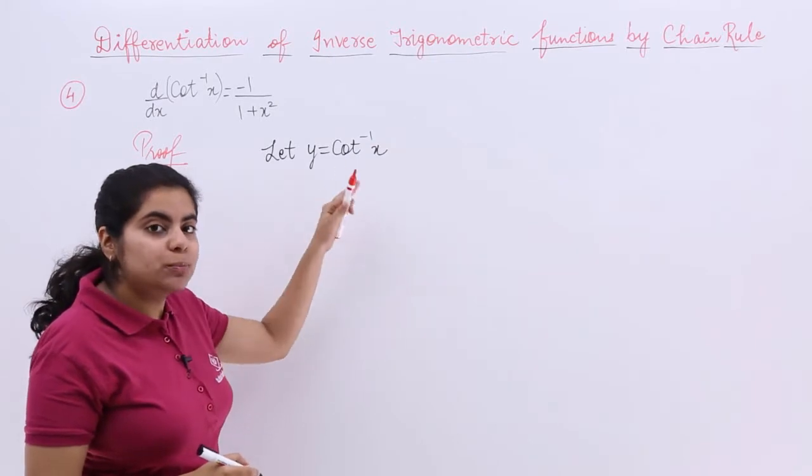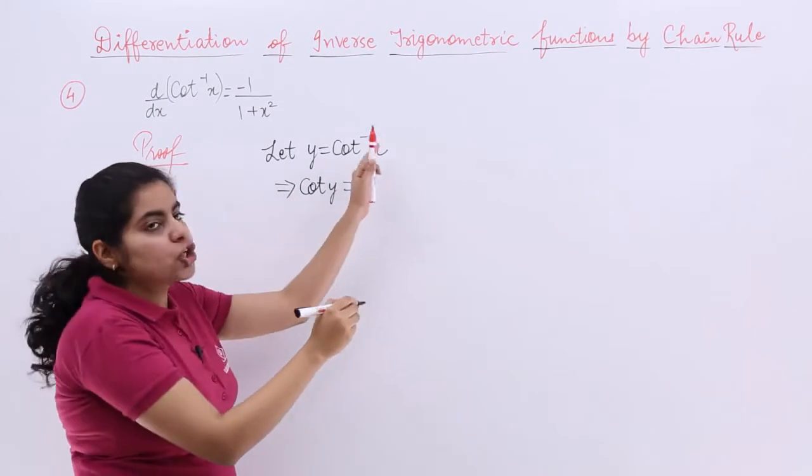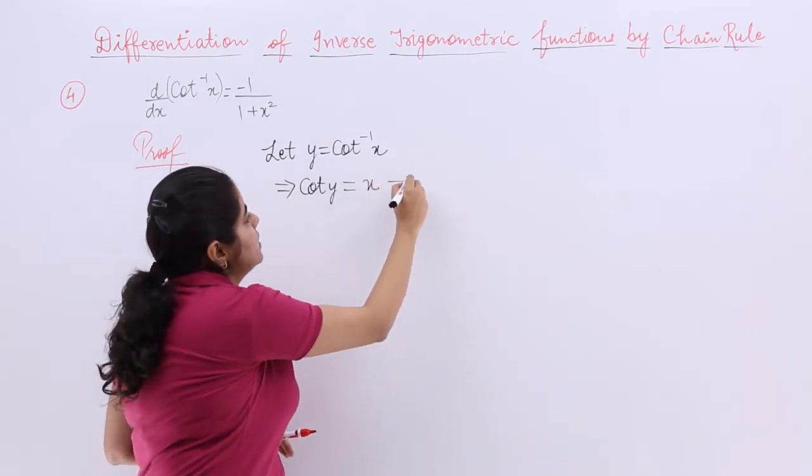Now taking cot both sides, it is cot y which is equal to cot cot inverse x. They nullify so it becomes equal to x.